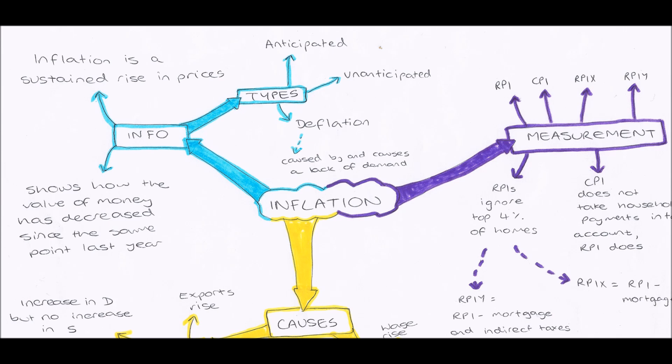And the RPIY doesn't include mortgage payments, but it also doesn't take into account indirect taxes, so taxes on consumption, so things like VAT.